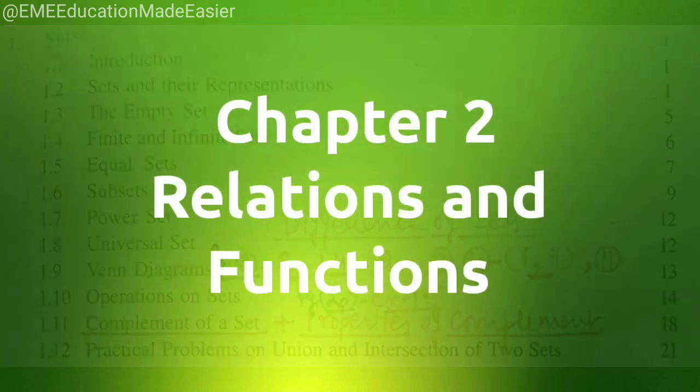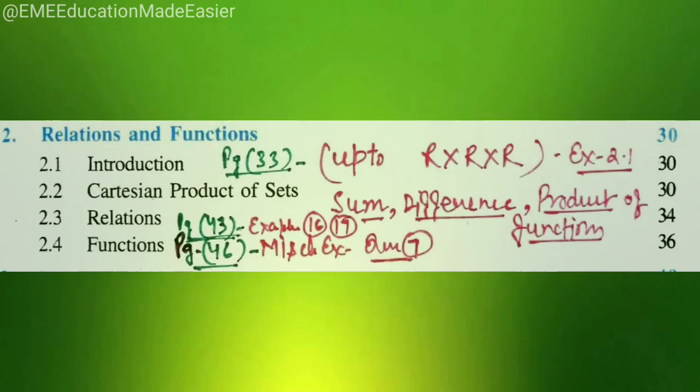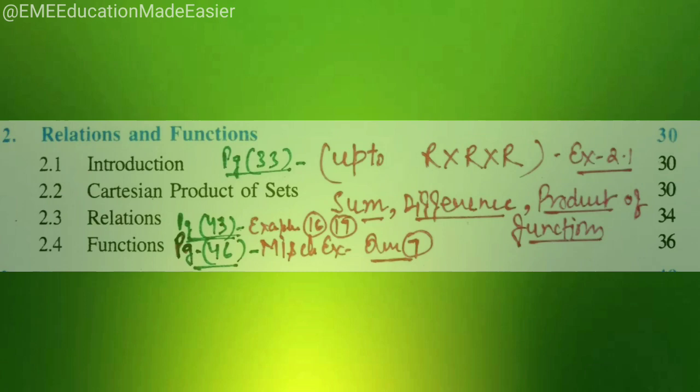Coming to relation functions, page number 33 up to R cross R cross R, exercise 2.1 has been deleted. And as regards to sum, difference, product of functions, we have page number 43, example 16 and 17 and from page number 46, miscellaneous exercise question number 17, all have been deleted.